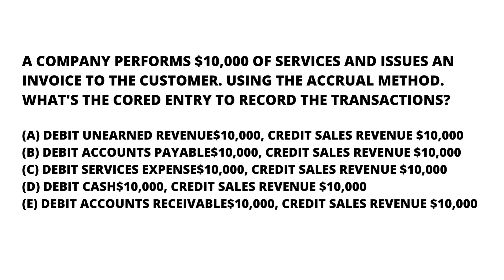Option C: debit service expense ten thousand dollars, credit sales revenue with ten thousand dollars. Option D: debit cash with ten thousand dollars and credit sales revenue with ten thousand dollars. Option E: debit accounts receivable with ten thousand dollars and credit sales revenue with ten thousand dollars.